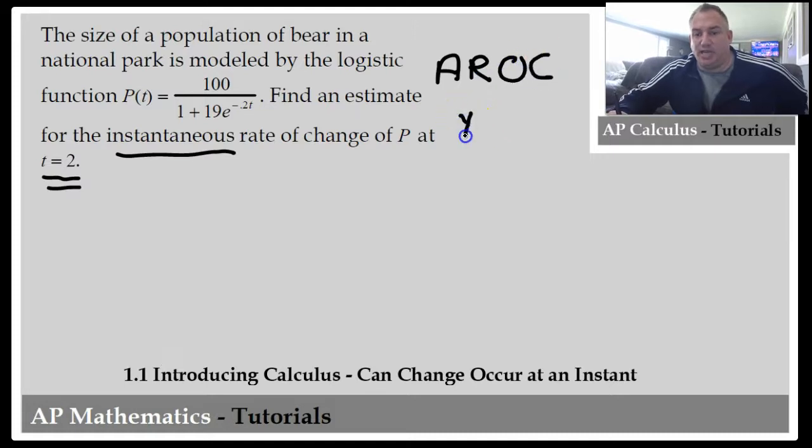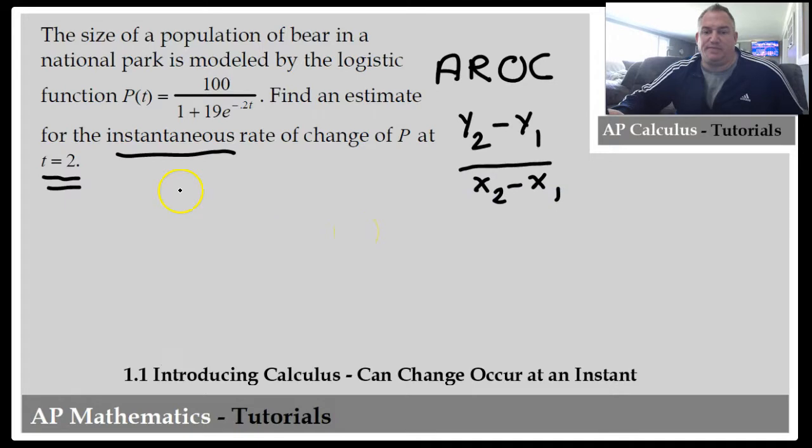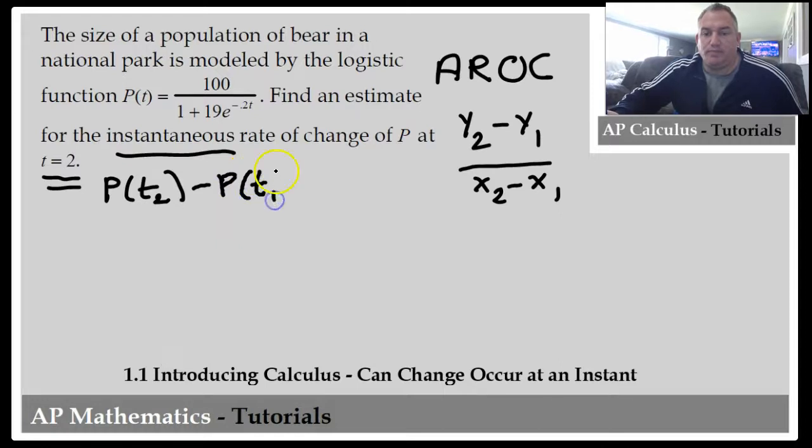The average rate of change, as you all know, is y2 minus y1 over x2 minus x1. Our problem is just a little bit different notation. We're going to have P of t sub 2 minus P of t sub 1, divide that by t sub 2 minus t sub 1.